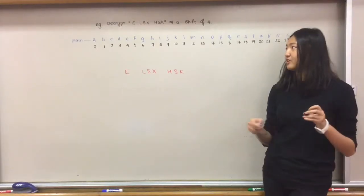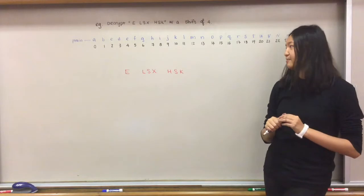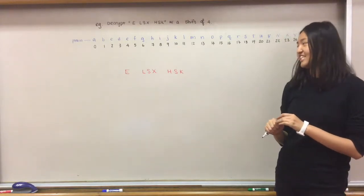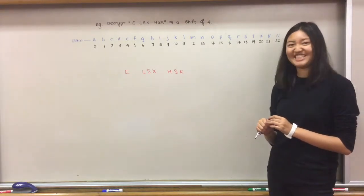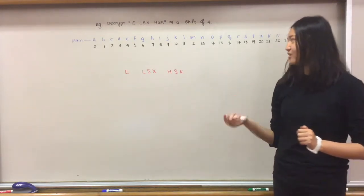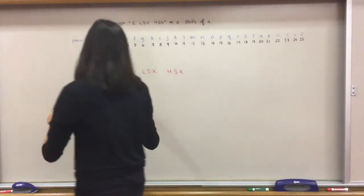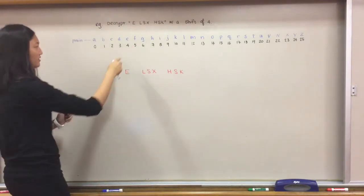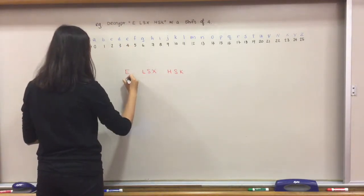Same thing, we are going to decrypt the same example, ELSSXHSK with a shift of 4. First step, we map the letters onto the numbers again. E will be 4, L is 11, S is 18, X is 23, 7, 18, 10.